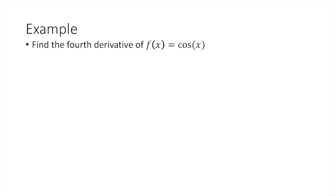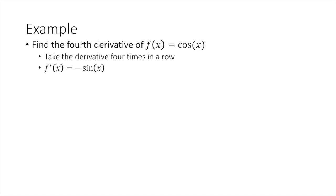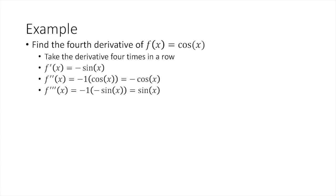Find the fourth derivative of cosine of x. The first derivative is negative sine of x. Now we take the derivative again. The derivative of sine of x would be cosine of x, but we actually have negative sine of x, so it's going to be negative cosine of x. That gives us the second derivative. Now we derive it again. The derivative of cosine would be negative sine, but we have a negative cosine, so now it's negative sine times negative one, or just regular sine. Then we take the derivative one more time. The derivative of sine is cosine, and we'll have our answer.